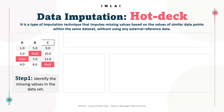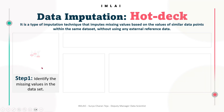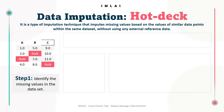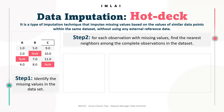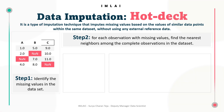The first step is to identify observations with missing values in the dataset. These are the three columns and these are the values which are missing in the respective columns. Then, step 2: for each observation with missing values, find the nearest neighbors among the complete observations in the dataset. The number of nearest neighbors to consider can be predefined or determined dynamically based on a specified criteria, such as distance.